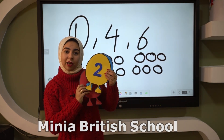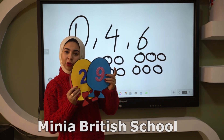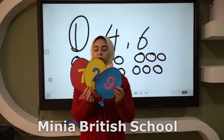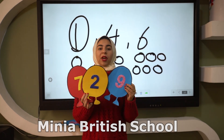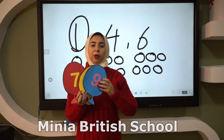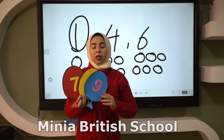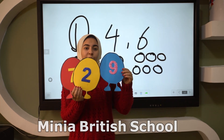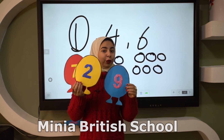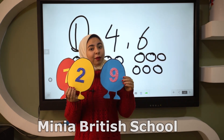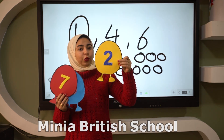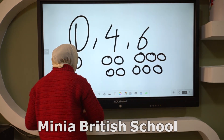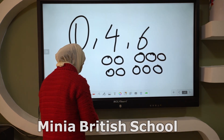Here I have another three numbers: seven, two, and nine. Which one is the smallest number — seven, two, or nine? Which color — red, yellow, or blue? Excellent! Two is the smallest number.